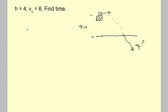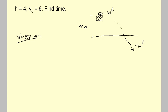I hope you're prepared to consider this problem as a combination of vertical and horizontal. Horizontally, that initial velocity of 6 is all horizontal — the velocity vector starts out completely horizontal, but as it progresses,